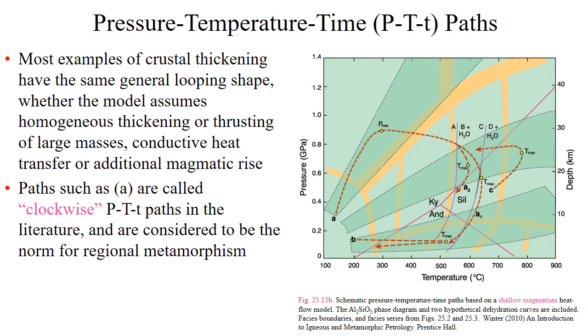Path C is an example of what's conventionally called a counterclockwise P-T-t path. It is thought to represent high-grade gneisses and granulite facies resulting from intrusion of large volumes of mafic magma into a lower or middle crust. The rapid introduction of magmatic heat and mass causes both pressure and temperature to increase in unison below the intrusions. This is followed by isobaric cooling because the high density of mafic magma does not lead to crustal buoyancy, so uplift and erosion is limited.